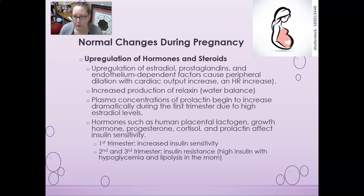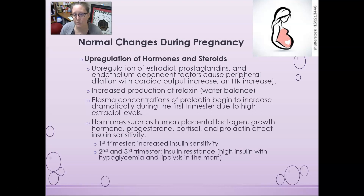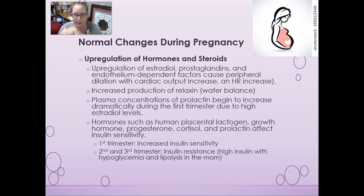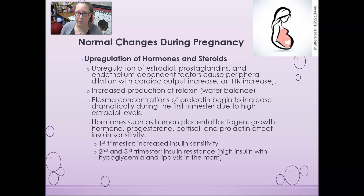Hormones such as human placental lactogen, growth hormone, progesterone, cortisol, and prolactin will all affect insulin sensitivity in the mom. In the first trimester she will have increased insulin sensitivity, and in the second and third trimester she may develop insulin resistance, with high insulin levels, hypoglycemia, and lipolysis. This has to do with the baby co-opting glucose, favoring the baby getting glucose while mom uses fat as fuel so the baby can continue growing.